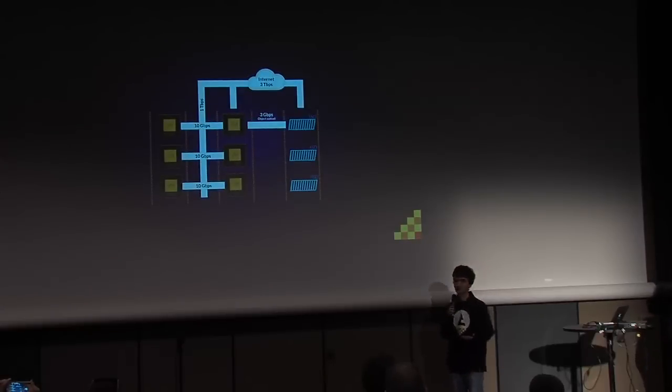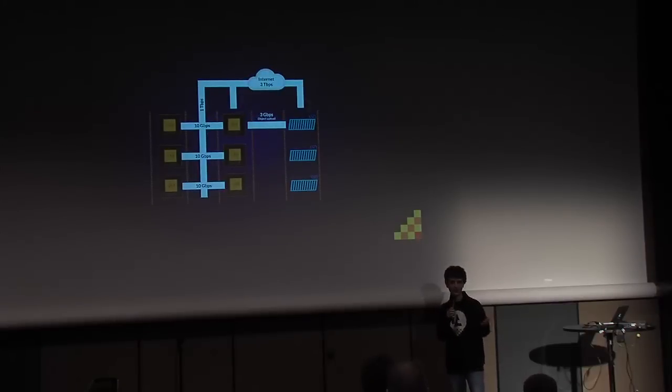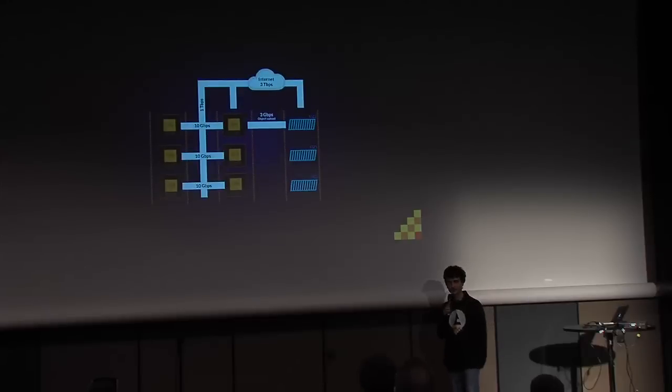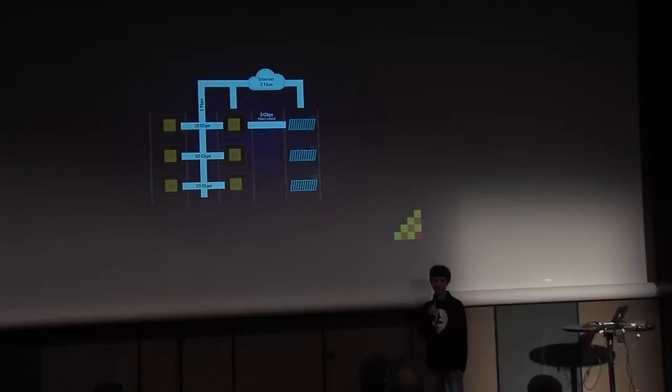For Runabove, we decided that if we want to make a powerful cloud, we need a powerful network. So we designed our network from scratch. On the left side of this slide you can see a scheme of a rack. Entering this rack, there is the OVH 3 terabit network. On the top of the rack we have a switch that can commute up to 1 terabit per second. All the compute nodes running Nova have a dedicated network interface for the customer at 10 gigabits per second. On the right side you can see Swift and our object storage, also connected to this network.